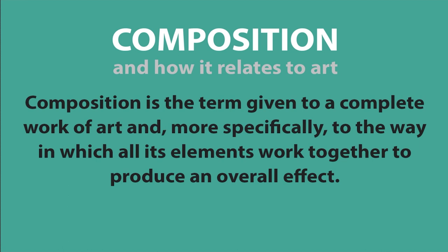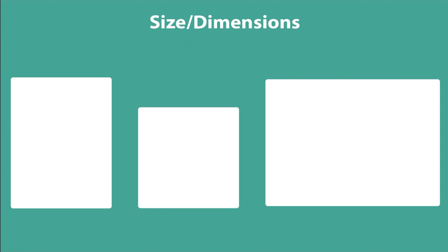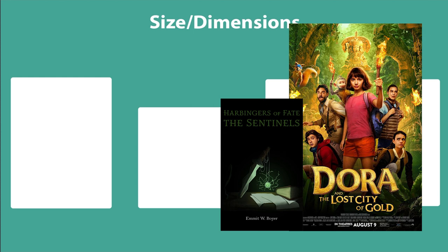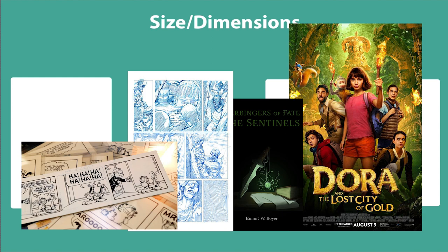Let's start from the very beginning: size and dimension of the paper you choose. If you're going to be a working artist, you're going to be given dimensions and restrictions to work within. That restriction can be anything from a movie poster to a book cover to a comic book page or newspaper — everything has dimensions and restrictions.